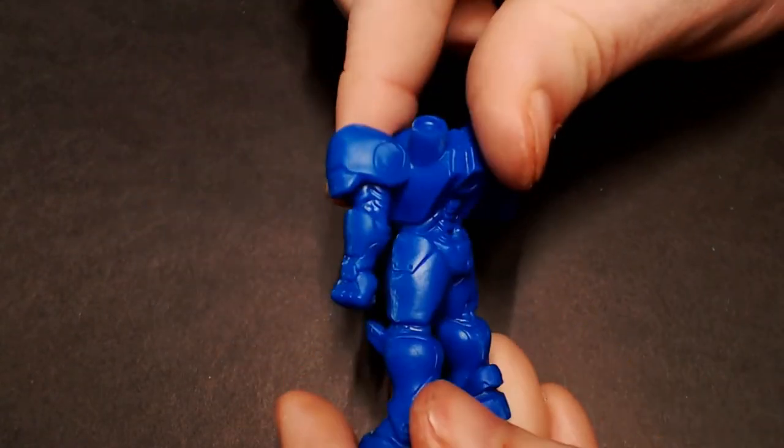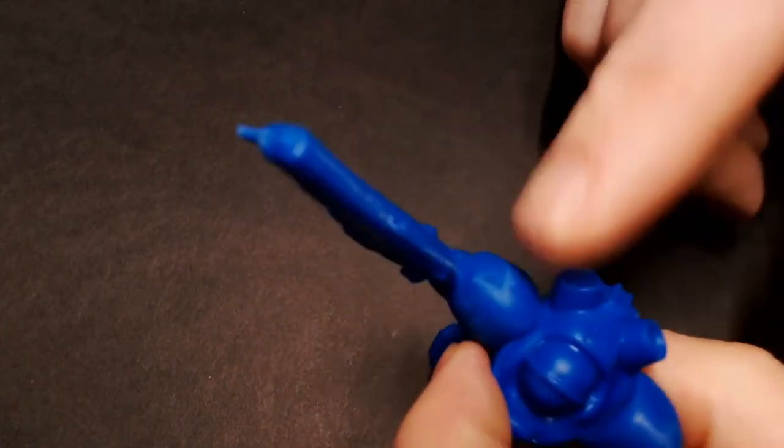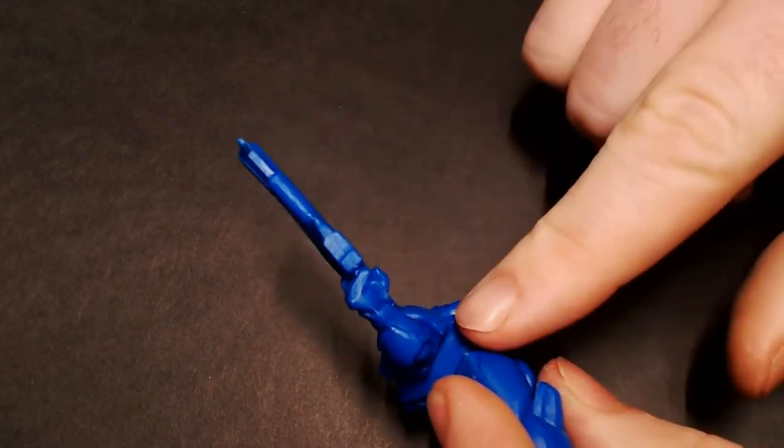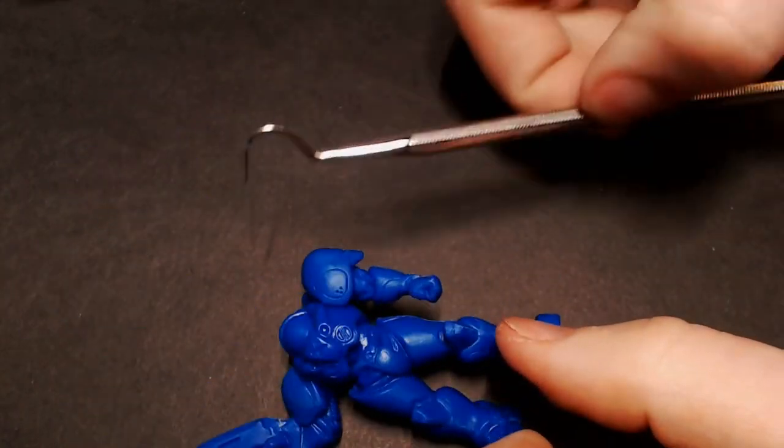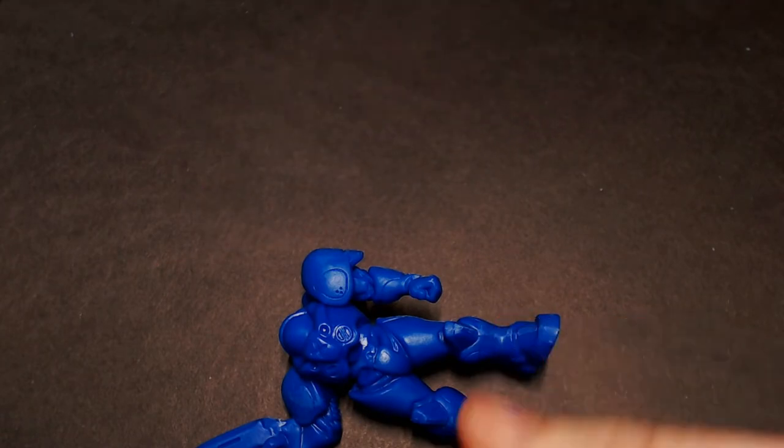So this is after we've done all the mold lines, gotten all that stuff removed, and you can see sometimes with these softer plastics it'll kind of peel up on you, just use your hobby knife or whatever to get that stuff off of there. And then next is going to come in the scribing tools.